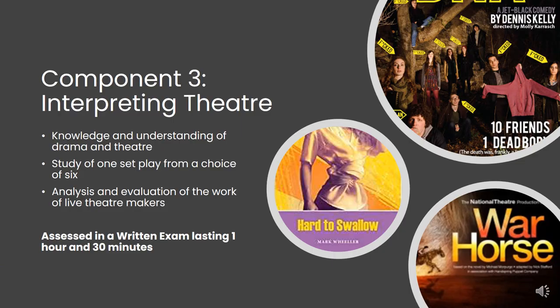Component 3, described as Interpreting Theatre, provides pupils with the opportunity to explore play scripts from a different perspective. Pupils will be tested on their knowledge and understanding of drama and theatre while studying one set play from a choice of six. This component also offers pupils opportunities to evaluate a live theatre performance, where we as a department take our GCSE group to see a professional production — which is always a great opportunity, as any chance to get ourselves to the theatre is fantastic. We then review the performance as part of this component. This is assessed in a written exam at the end of year 11.